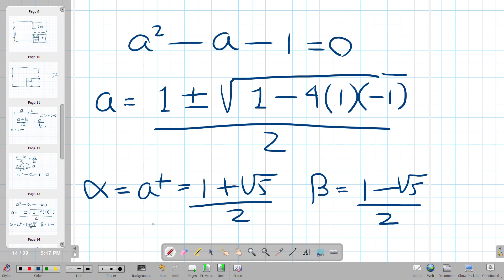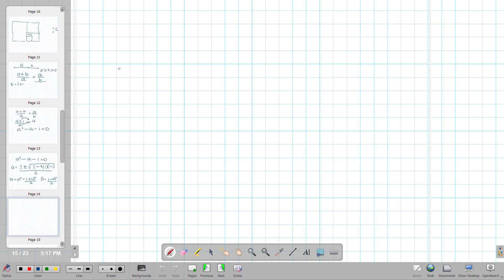So you will see a generating function for the Fibonacci series looking like this. F of n is equal to one over square root of five, alpha to the n minus beta to the n.